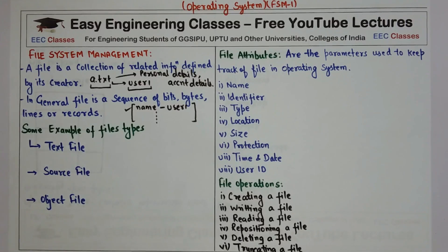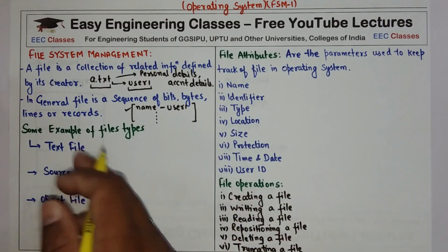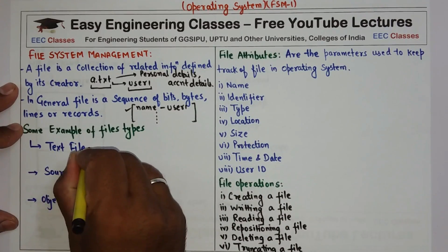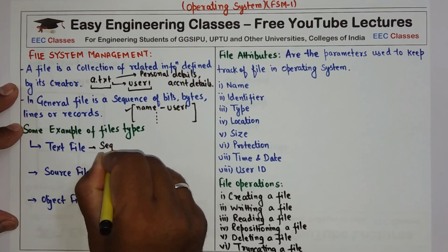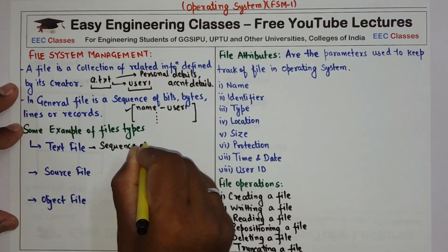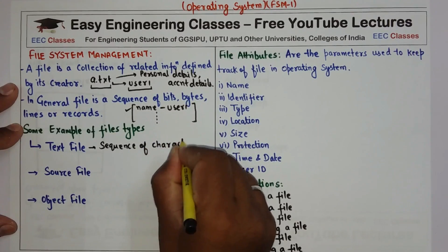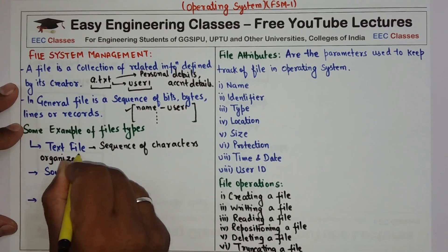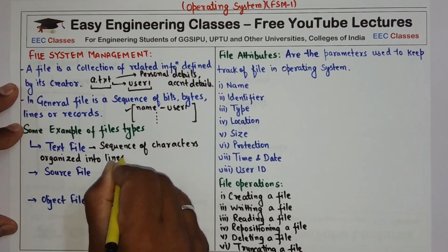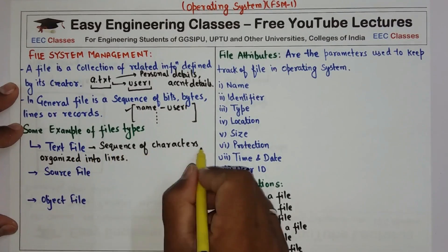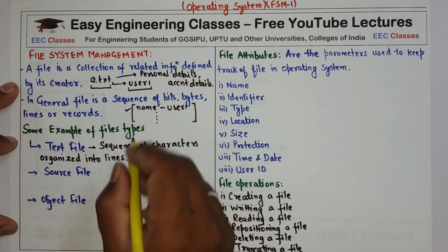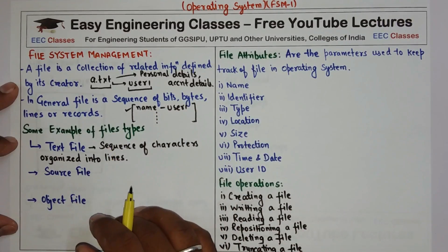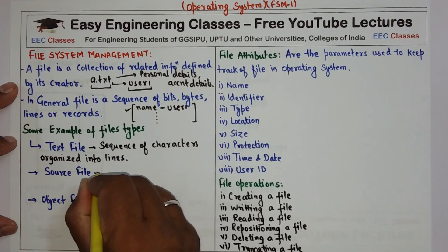There are different types of files. Some examples are: text file, source file, and object file. A text file is a sequence of characters organized into lines. For example, a text file contains characters like 'n', 'a', 'm', 'e', and so on, organized into lines. This is a simple text file.